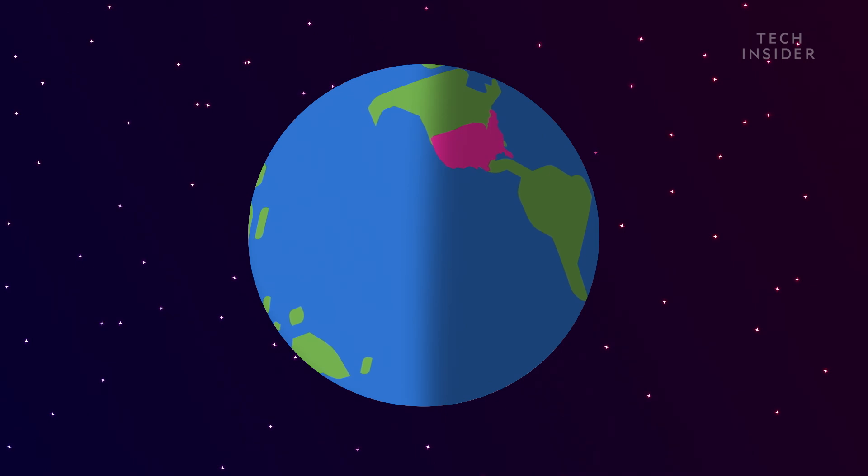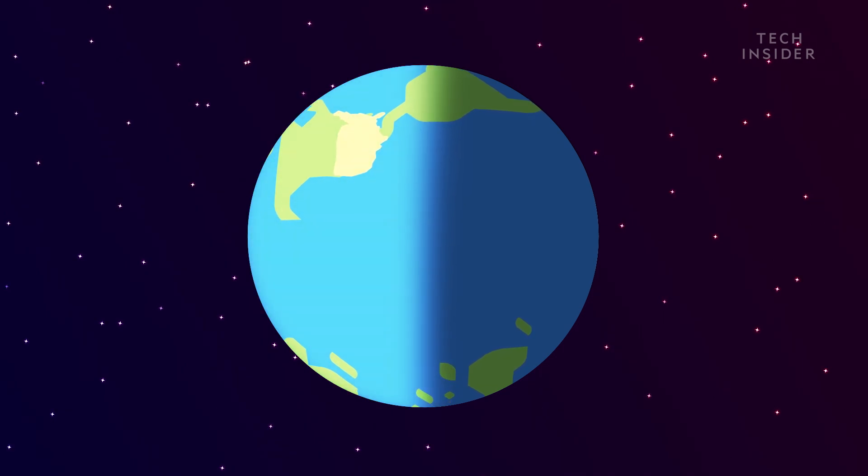But if we tilted Earth's axis even more to 90 degrees, the U.S. would get sunlight 24-7, around the clock, for months on end. And it's not just the U.S. The entire Northern Hemisphere would be like this.